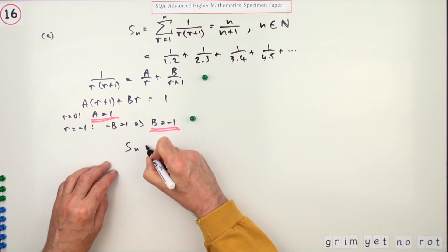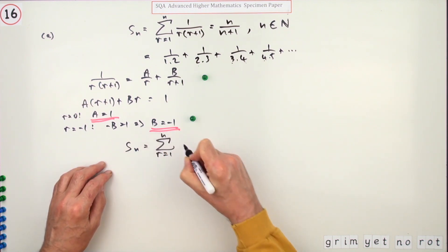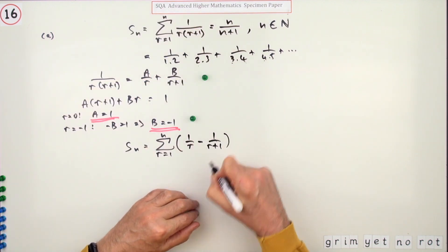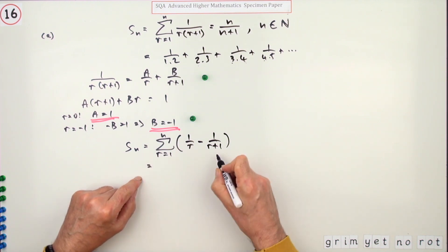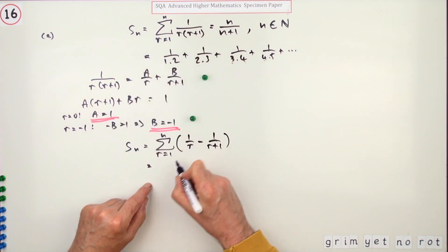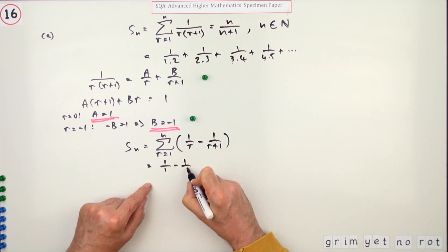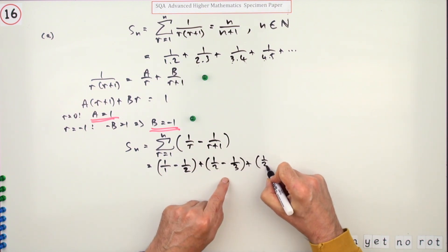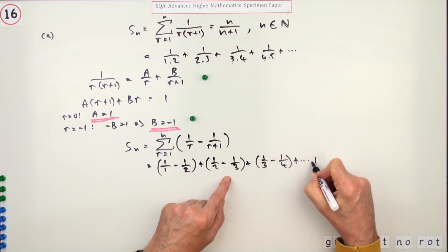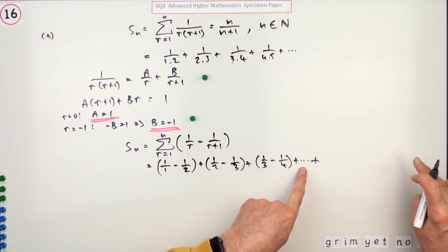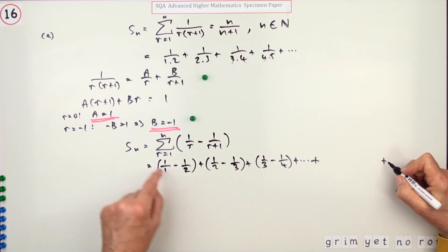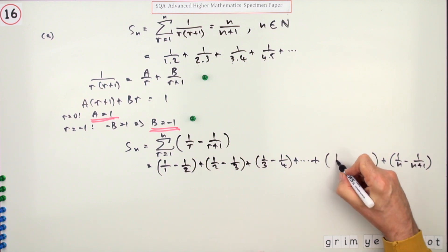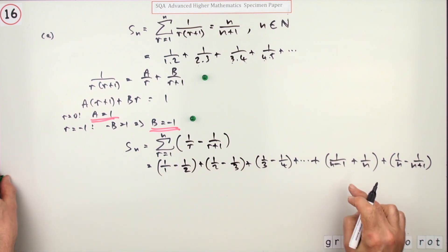So S(n) is the sum from r = 1 to n of (1/r − 1/(r+1)). Writing that out: for the first term you've got 1/1 − 1/2, then 1/2 − 1/3, then 1/3 − 1/4, and so on. For the general approach you then put 'and so on' in the middle and write down not just the last term but also the term before it: so it finishes with 1/(n−1) − 1/n, then 1/n − 1/(n+1). Writing that out gets a mark.